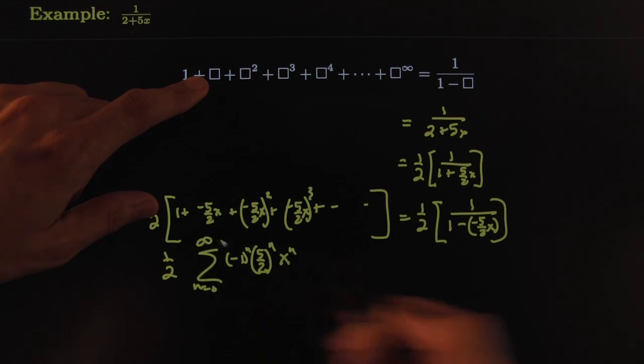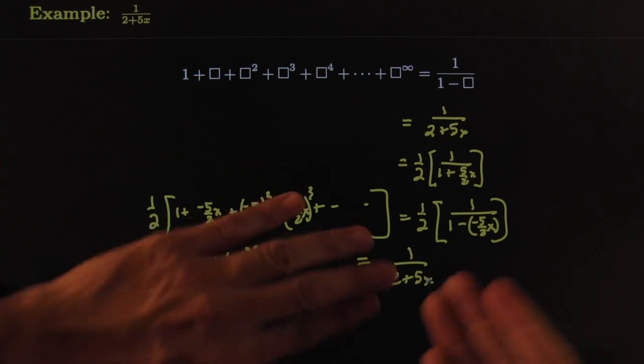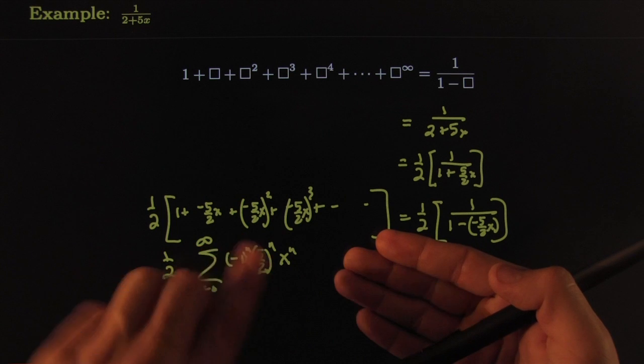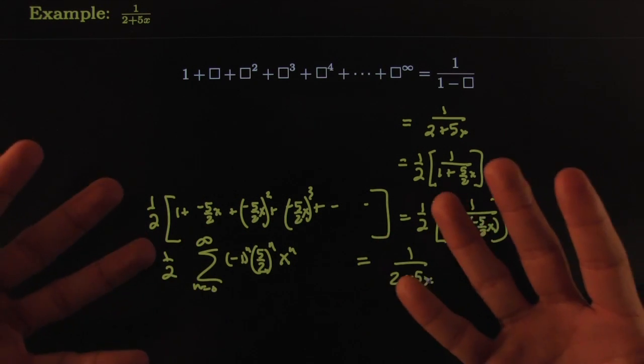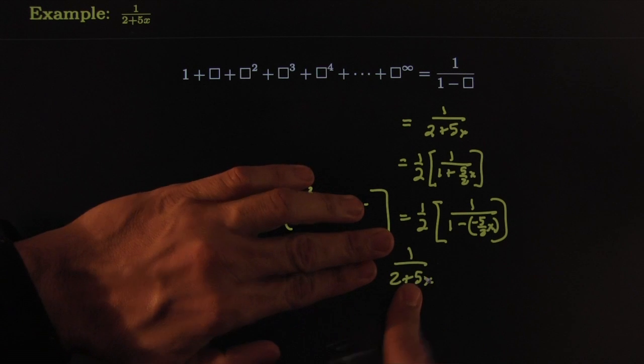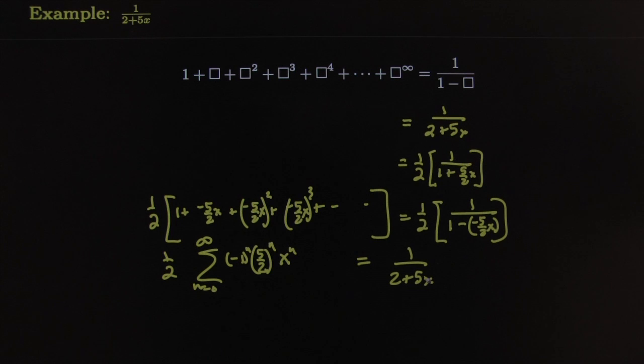BAM! That's equal to 1 over 2 plus 5X. Not a polynomial. Polynomial, told you, see why they pay me? You see why they pay me? Not a polynomial is equal to a polynomial, riding the ferry, the bridge. All right, there's more where that came from. See you guys next time.